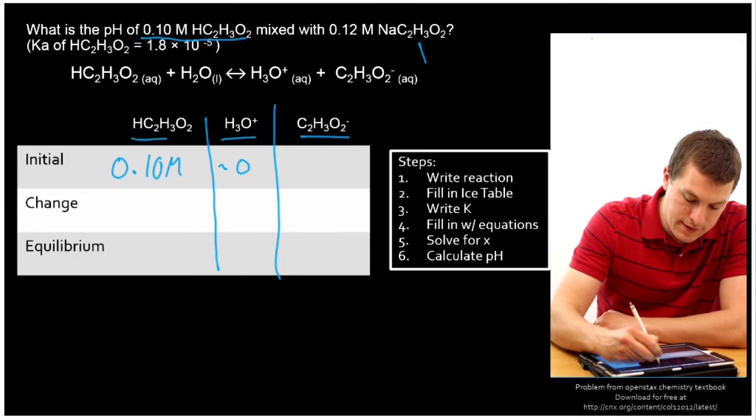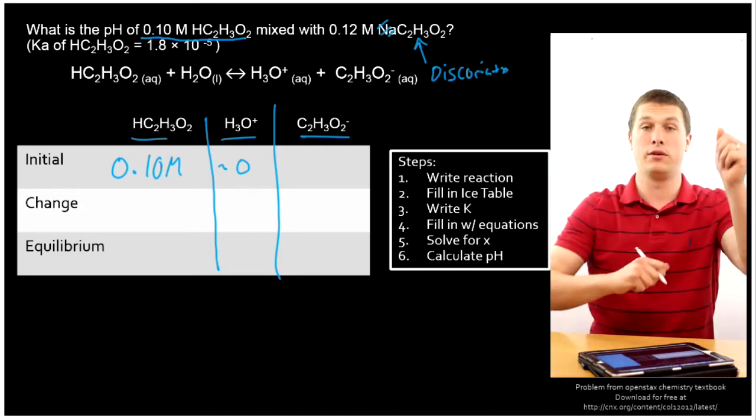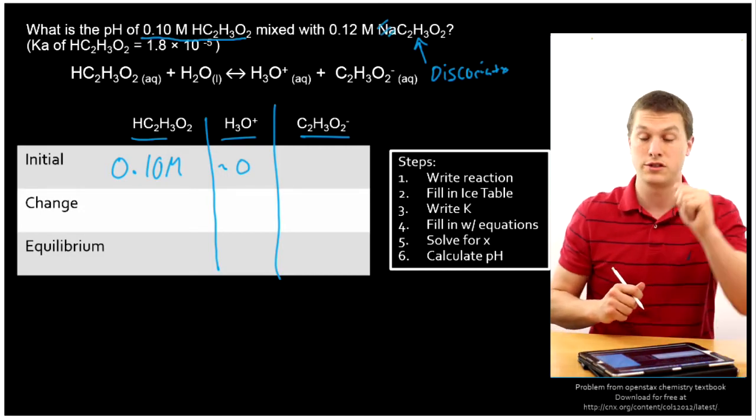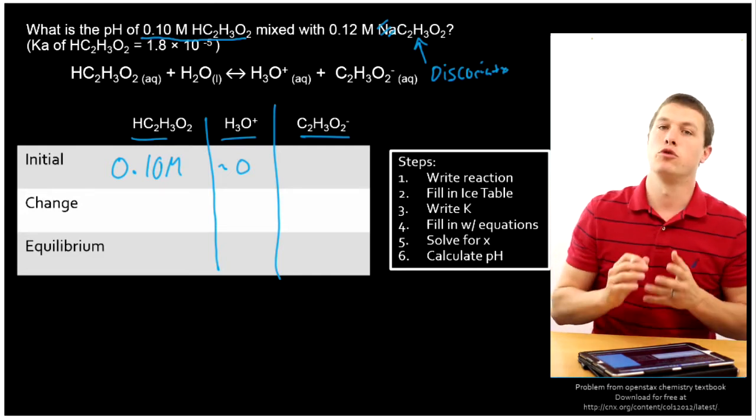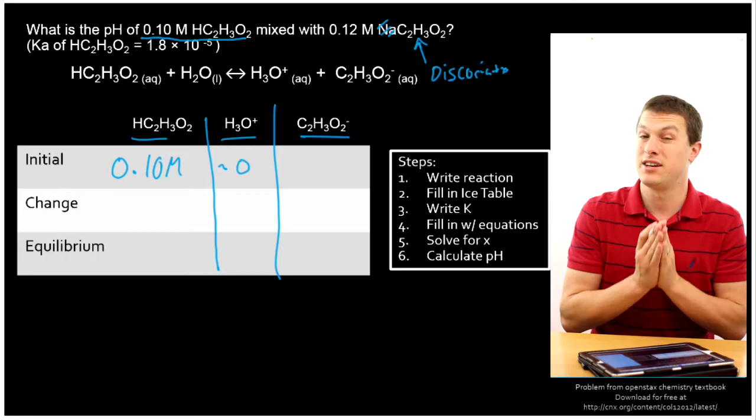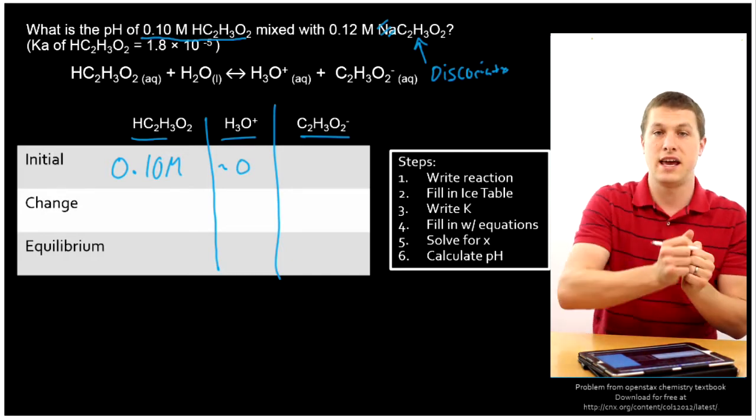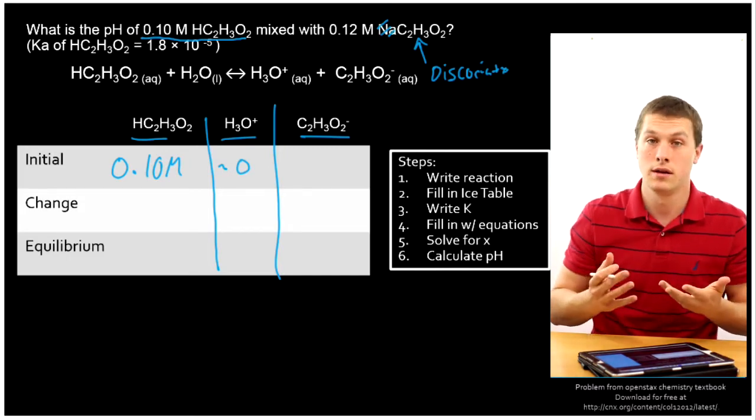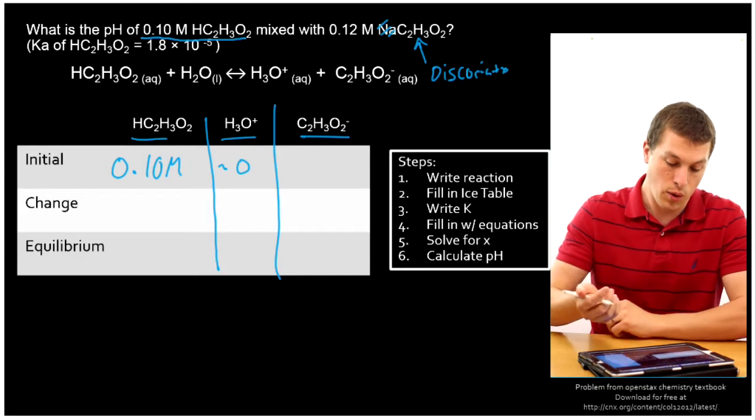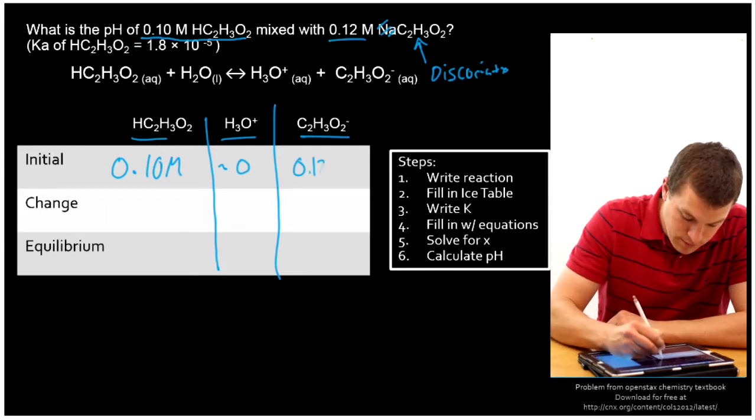How do we get our acetate ion solution? Well, remember that this guy completely dissociates. That means it splits apart. And when it does that, my sodium ion drops off and it's floating around in solution. So there's 0.12 molar sodium ions in solution. There's also 0.12 molar acetate ions in solution. So remember, if you have a soluble salt that totally dissociates, the concentration of the salt you put in is the same as the concentration of the ions that are drifting around, so long as there's just one of each type of ion.